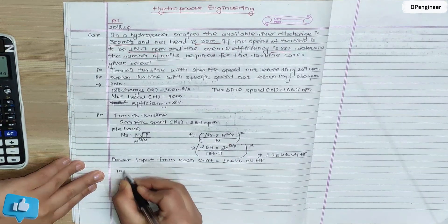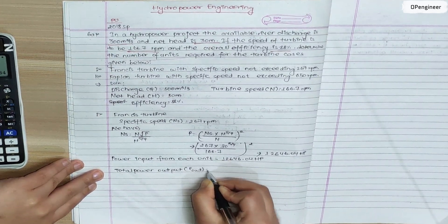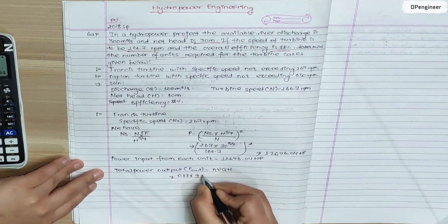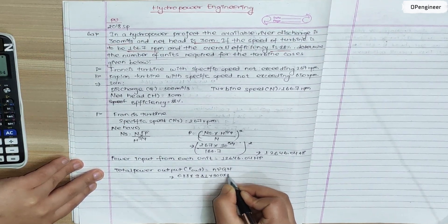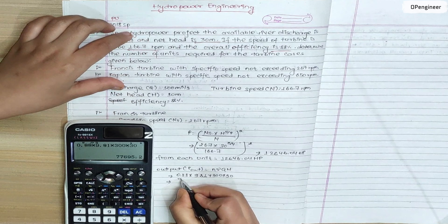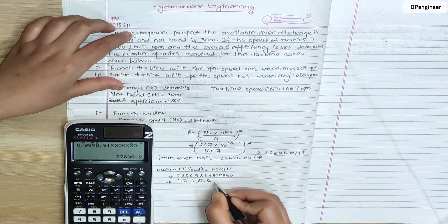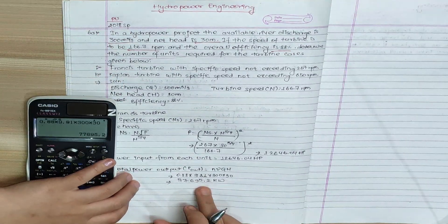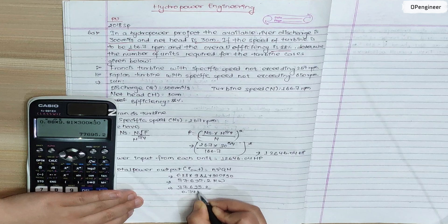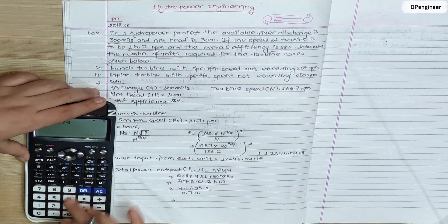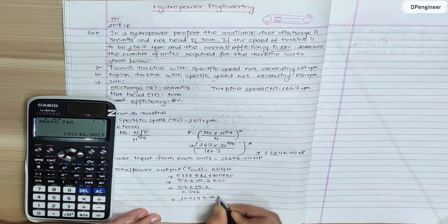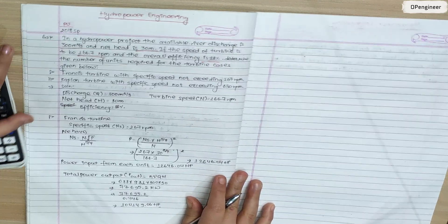Now we need to calculate the total power output. The formula is P output = efficiency times gamma times Q times H. So 0.88 times 9.81 times 300 times 30 equals 77695.2 kilowatts. Converting to horsepower: 77695.2 divided by 0.746 equals 104149.06 horsepower.